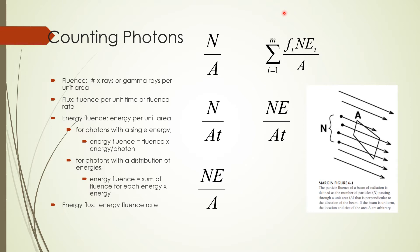The time rate of change of fluence is called radiation flux. Flux is given as n divided by A times T. If all particles or photons in the radiation have the same energy, then we can specify an energy fluence as simply the product of fluence and energy E. If the radiation beam consists of particles or photons of different energies, say E1, E2, all the way to E subscript n, then the energy fluence is given as above where the term F subscript i is the fraction of particles having energy E subscript i. Energy flux is also known as intensity and is obtained by multiplying the flux by the energy E of a particle. If there is a distribution of particles, then the summation symbol is used with the correct weighting for the fraction of photons at each energy.